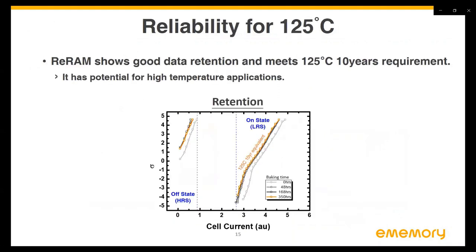The RRAM technology also has potential for high temperature applications. To evaluate high temperature reliability, we put the post-cycle chip in a 200°C oven. We monitor data retention for more than 350 hours, which is equivalent to 125°C for 10 years lifetime. The data shows a sufficient cell current window to enable e-flash replacement for applications in high-voltage BCD processes.